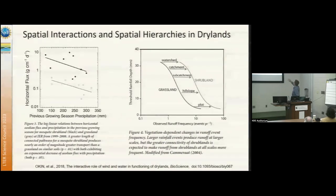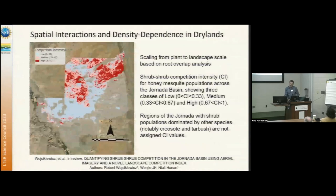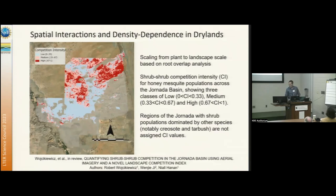On the right hand side, looking at cross-scale interactions for hydrological processes — showing how fine-scale runoff events are very frequent, but you need a much bigger rainfall event to generate landscape-scale runoff events. This is showing a scaling up using remote sensing of shrub dynamics and competitive interactions, where one of my students developed a method to assess competitive intensity, and this is a scaled-up version of that analysis.